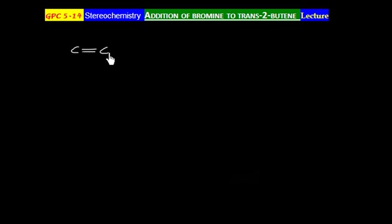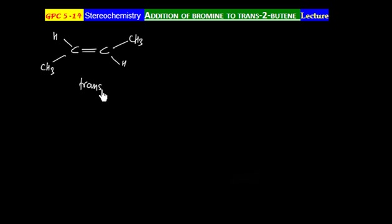In this lecture we will discuss the addition of bromine to trans-2-butene. This molecule is trans-2-butene, and if you remember, addition of bromine to an alkene is anti-addition.